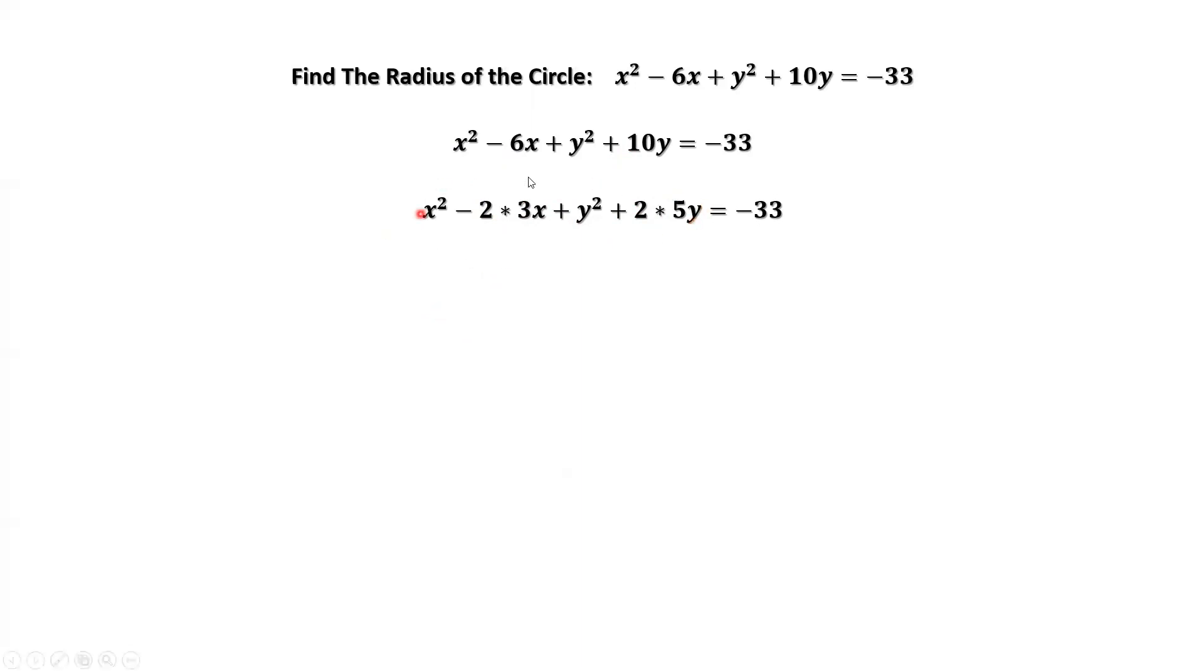From the left-hand side, we can see that h equals 3, k equals negative 5 because here is plus. What do we need to complete squares on the left-hand side? We need 3 squared here for the first group, and we also need 5 squared for the second group.